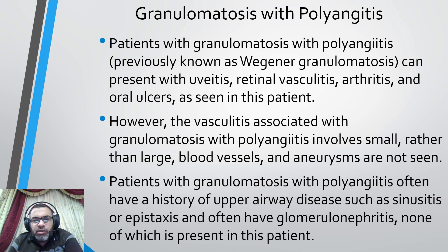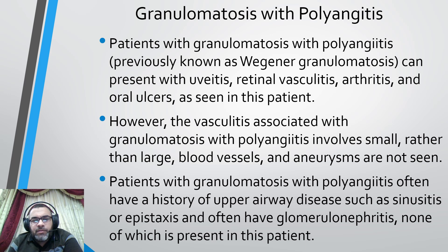Other differential diagnoses included in this case: granulomatosis with polyangiitis. Patients with granulomatosis with polyangiitis can present with uveitis, retinal vasculitis, arthritis, and oral ulcers as seen in this patient. However, the vasculitis associated with granulomatosis with polyangiitis involves small rather than large blood vessels, and aneurysms are not seen. These patients often have upper airway disease such as sinusitis or epistaxis and often have glomerulonephritis — none of which is present in this patient. So this differential is excluded.